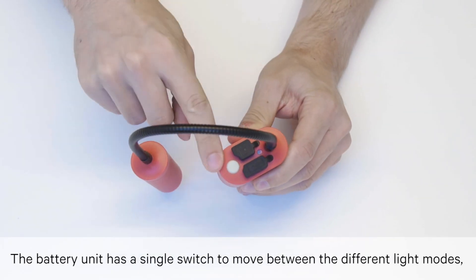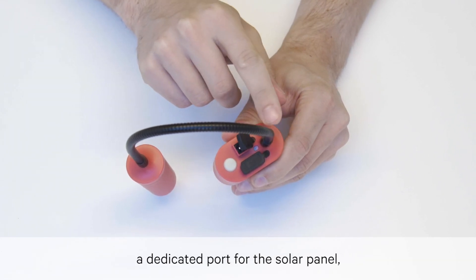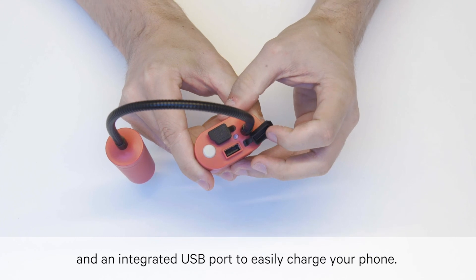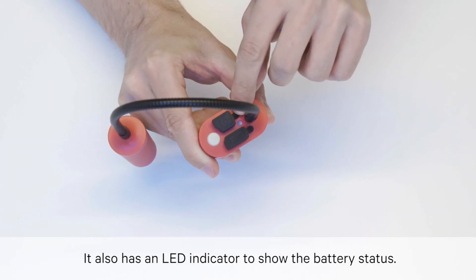The battery unit has a single switch to move between the different light modes, a dedicated port for the solar panel and an integrated USB port to easily charge your phone. It also has an LED indicator to show the battery status.